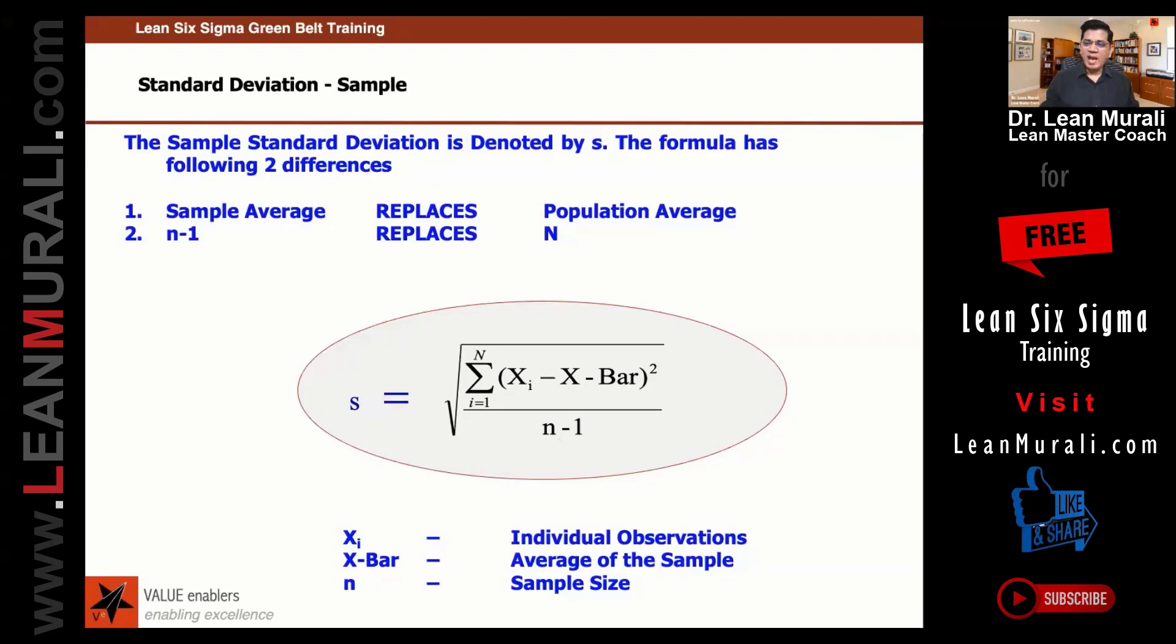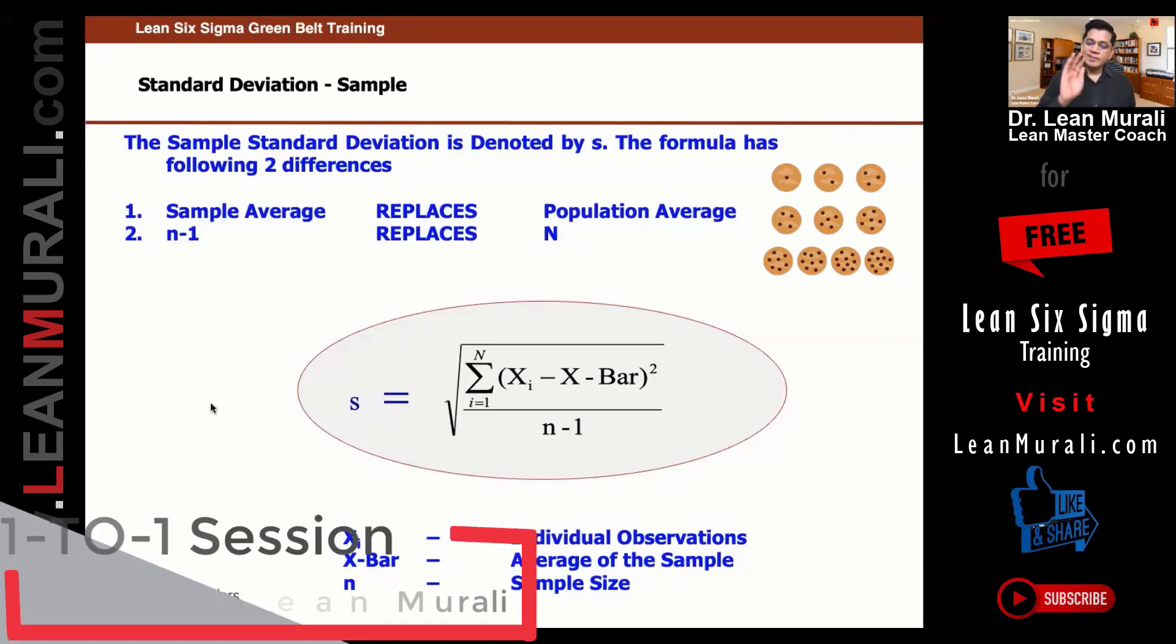Last time I explained: suppose the average of 10 biscuits is 25 grams and you know the weight of 9 biscuits—can you calculate the weight of the 10th biscuit? With 9 biscuits you can calculate the 10th, and 9 is nothing but 10 minus 1. Sample size is 10, and 9—this is called degrees of freedom. This is a deeper mathematical concept, so let's not dive deeper. It doesn't help to understand this so deeply, and that's why we leave it like that.